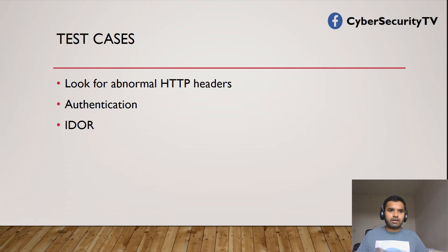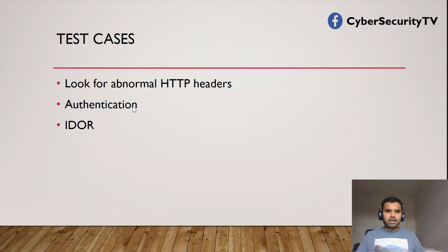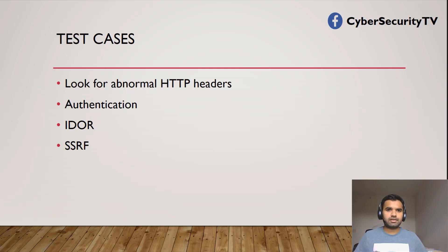The next one is insecure direct object reference. Object-level authorization checks should be considered in every function that accesses a data source using user input — this is on the OWASP Top 10 and definitely something to check in each and every API. For SSRF — server-side request forgery, which is different from cross-site request forgery — make sure the API does not allow a user to mutate server-side resources.